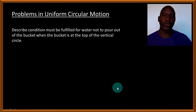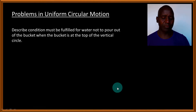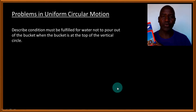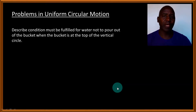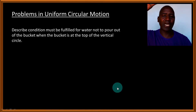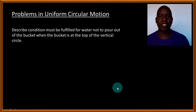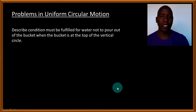In this lesson, we are going to look at problems in uniform circular motion, and we are going to look at one specific example found on page 52 of your course. We want to investigate what conditions must be fulfilled for the water not to pour out of a bucket when the bucket is at the topmost part of a vertical circle. Let's see what condition must be fulfilled in terms of the centripetal acceleration.